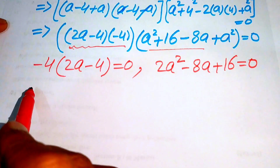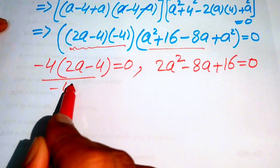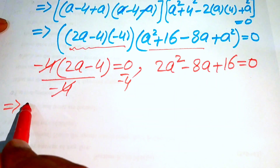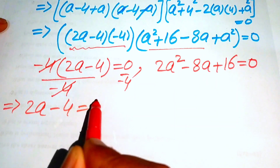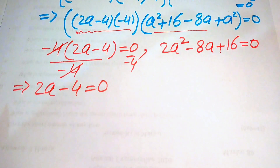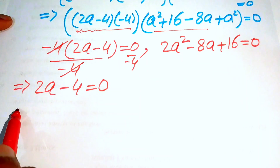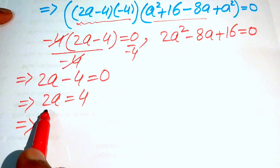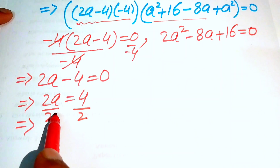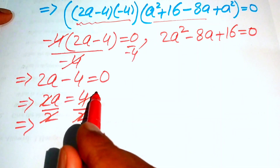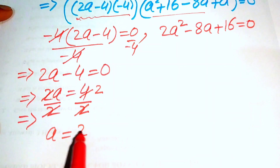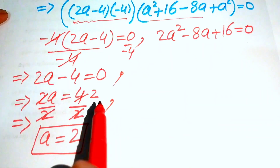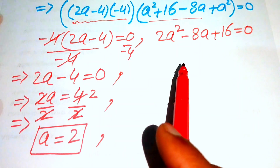For Case 1, dividing both sides by -4 gives 2a - 4 = 0, so 2a = 4, and dividing by 2 gives a = 2. This is our first real solution.